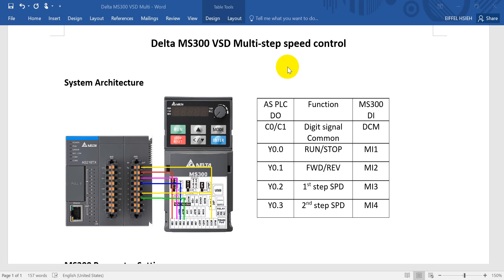Today we will introduce the Delta MS300 inverter multi-step speed control by digital input. You can find the system architecture here — we use our Delta SPOC digital output to control it.